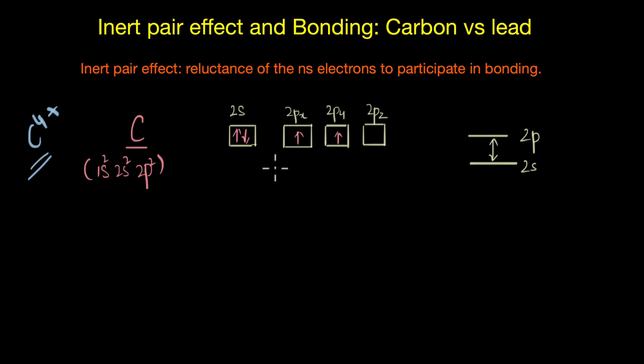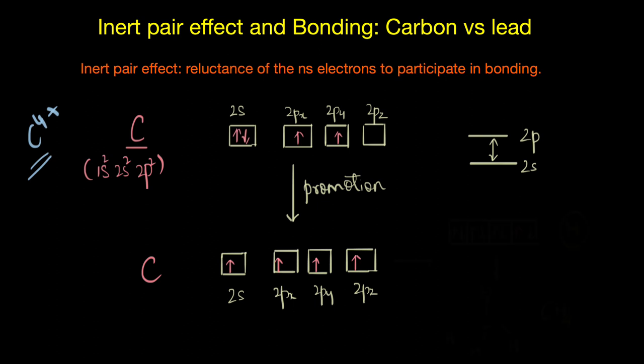Now for that, one of the 2s electrons will get excited or promoted to the empty 2p orbital, and this gives us four unpaired electrons which can hybridize and combine with other unpaired electrons to form four covalent bonds. Here we have the example of methane, CH4. Because the 2s and 2p orbitals are close in energy, it is easy to excite the 2s electron into the empty 2p orbital, and not just that—the energy required for this promotion is more than compensated by the energy released when forming the two extra covalent bonds.